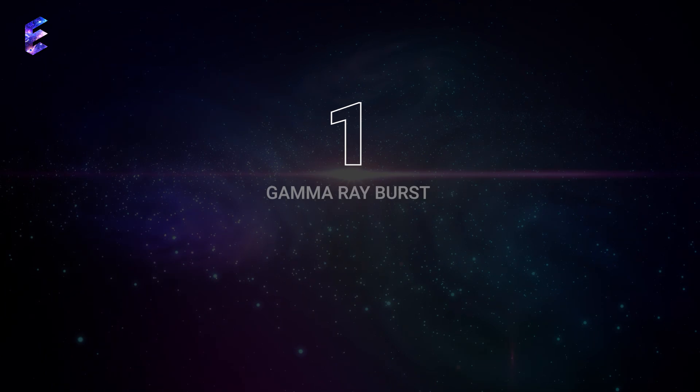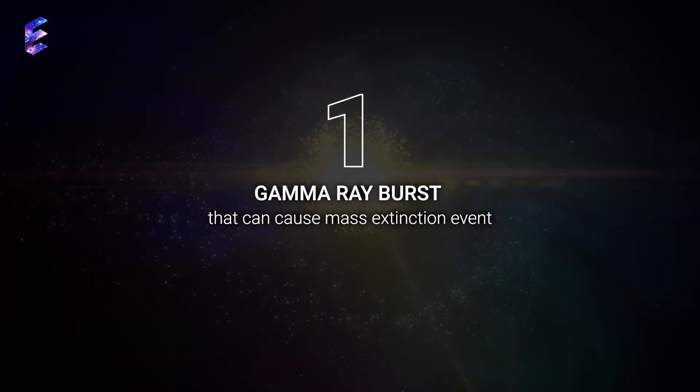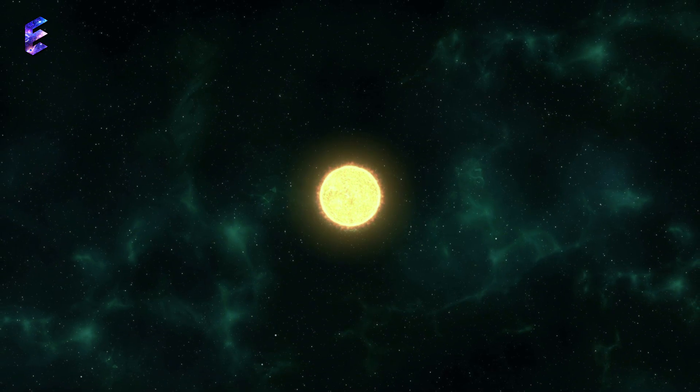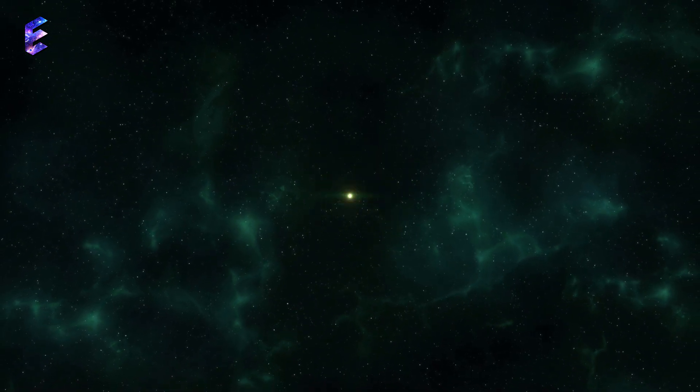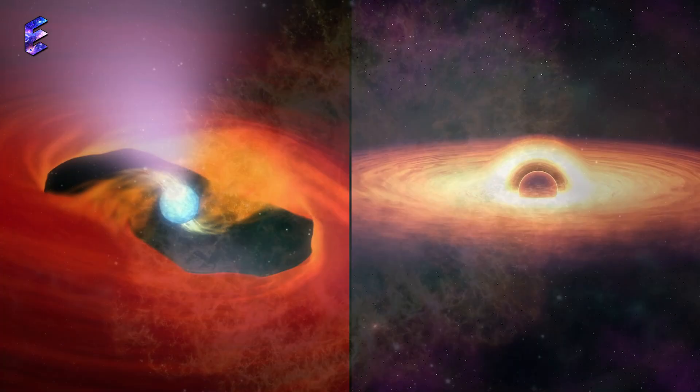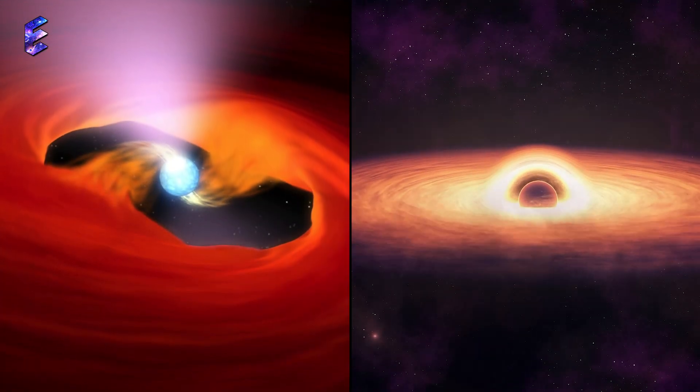Number 1. Gamma-ray Burst That Can Cause Mass Extinction Event. When stars at least eight times the mass of the sun run out of fuel, their core suddenly collapses in a blinding supernova, giving birth to a neutron star or a black hole.